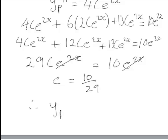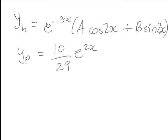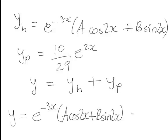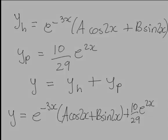Hence yp, which was C e to the 2x, is 10 over 29 e to the 2x. So finally the general solution y is yh plus yp. Hence the general solution of this DE will be y equals e to the negative 3x times (A cos 2x plus B sin 2x) plus 10 over 29 times e to the 2x.